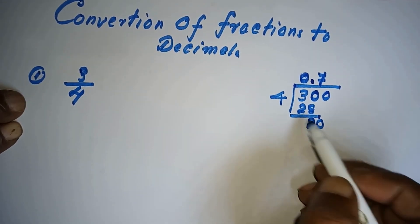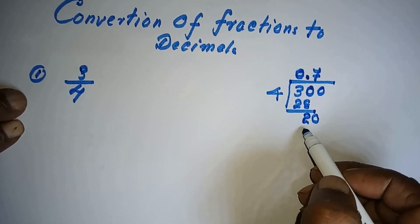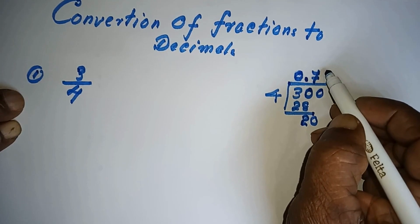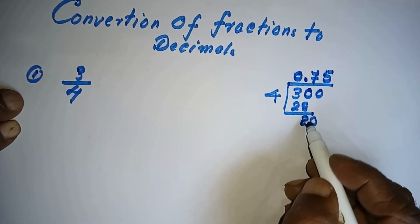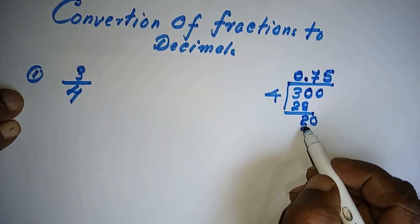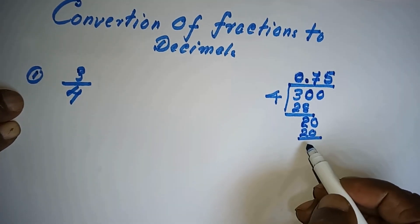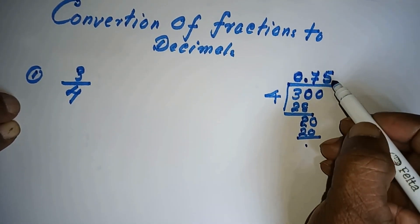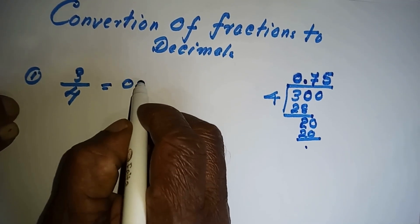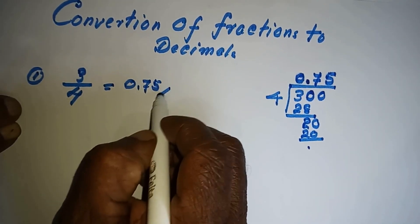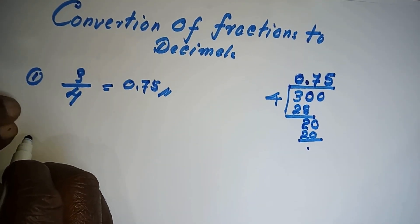See how many fours are there for 20. I think it is 5, so you have to put 5 here. 5 into 4 is 20, so no balance here. That means the answer will be 0.75. Let's take another fraction.